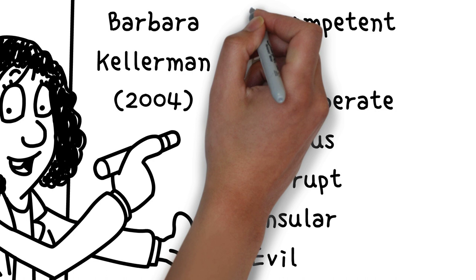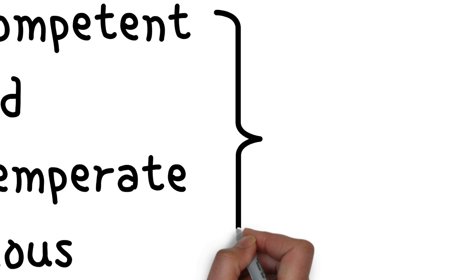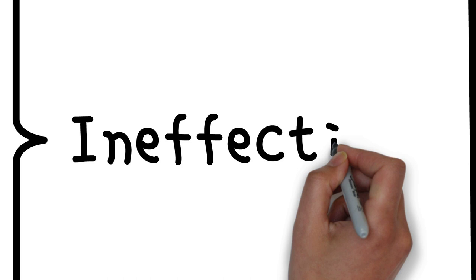Are they incompetent, rigid, intemperate or callous? If yes, then it is likely their leadership is ineffective. They will not be building high-performing teams. Their behaviour will be unprofessional.